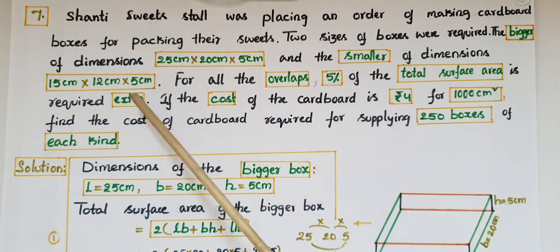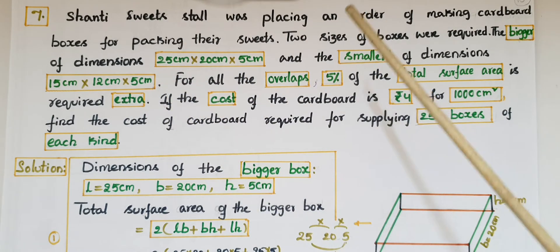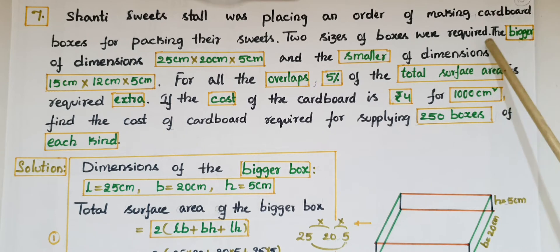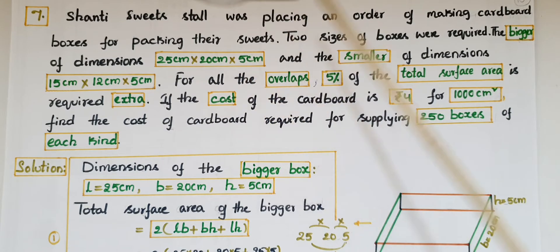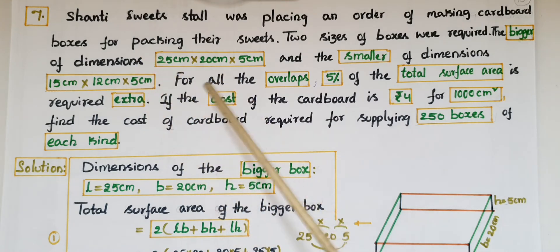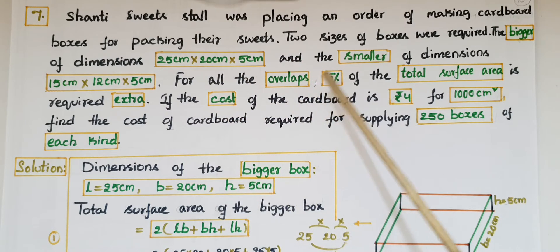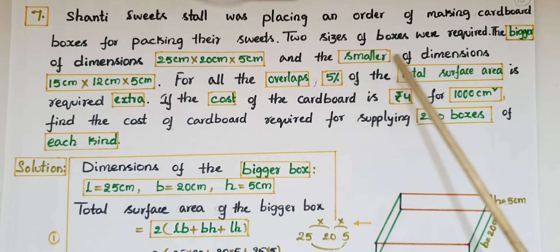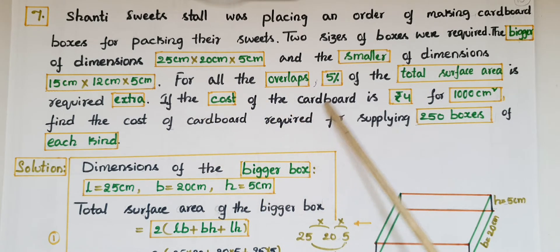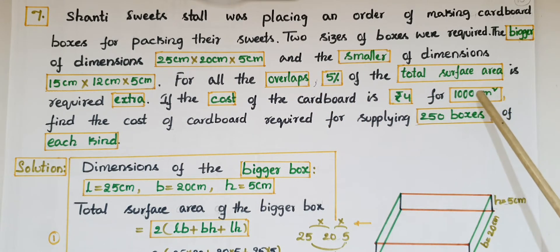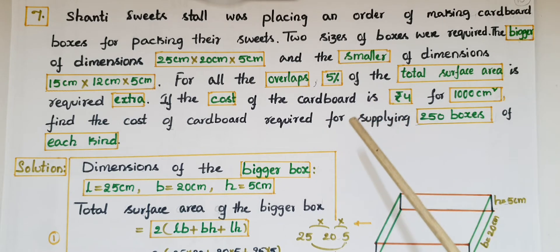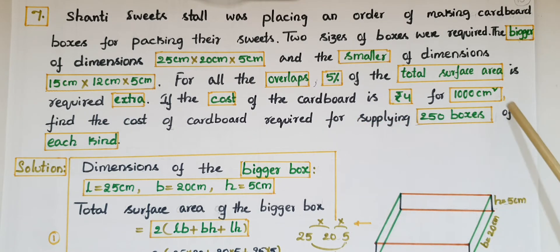The smaller box dimensions are 15 cm × 12 cm × 5 cm. For all the overlaps, 5% of the total surface area is required extra. The cost of the cardboard is ₹4 per 1000 cm². We have to find the total cost of cardboard required for supplying 250 boxes of each kind.